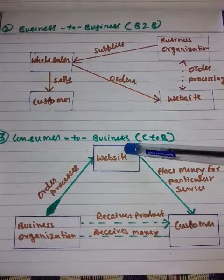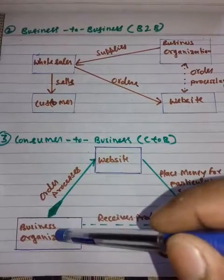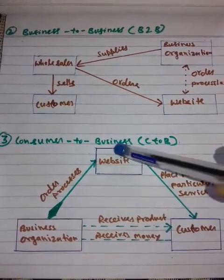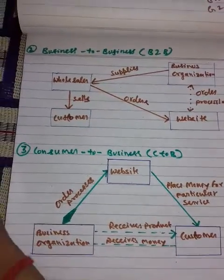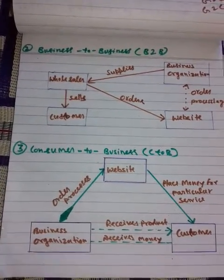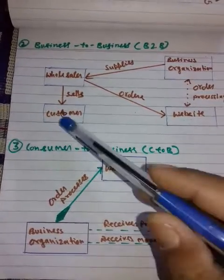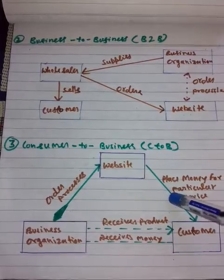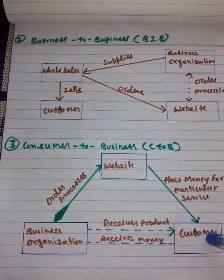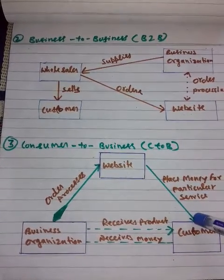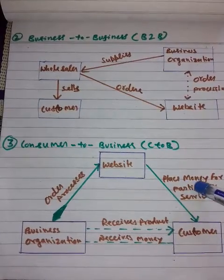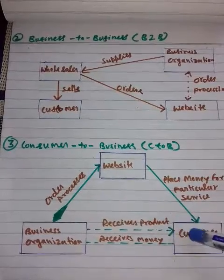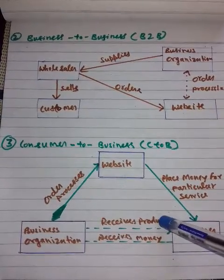In the C2B model, there is a website, a business organization, and a customer. Business organizations post their goods and bids to the website. Customers can then check the website and place their payment for particular services through order processing, and the customer receives the product.